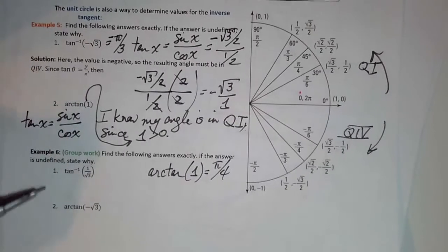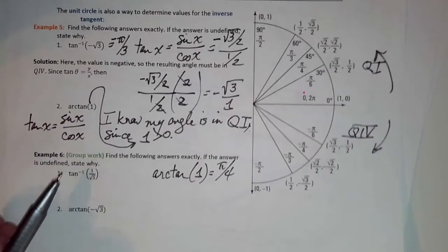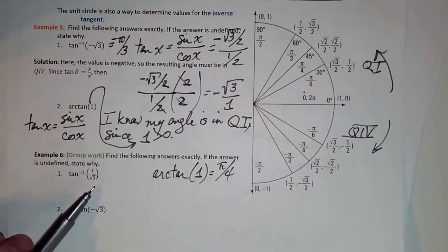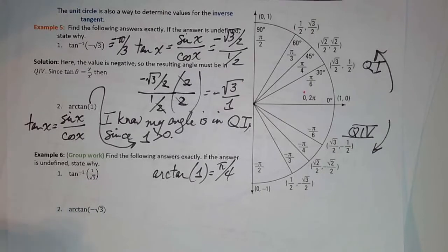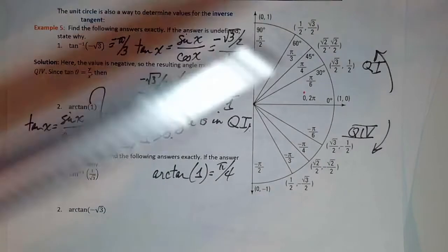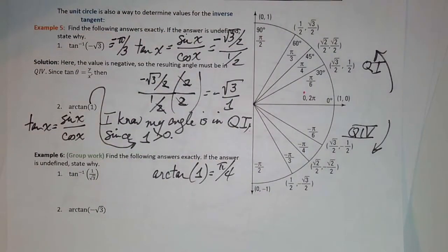Now find the inverse tangent of 1 over square root of 3 and the arc tangent of negative square root of 3 using the unit circle. Go ahead and pause the video to do those questions.